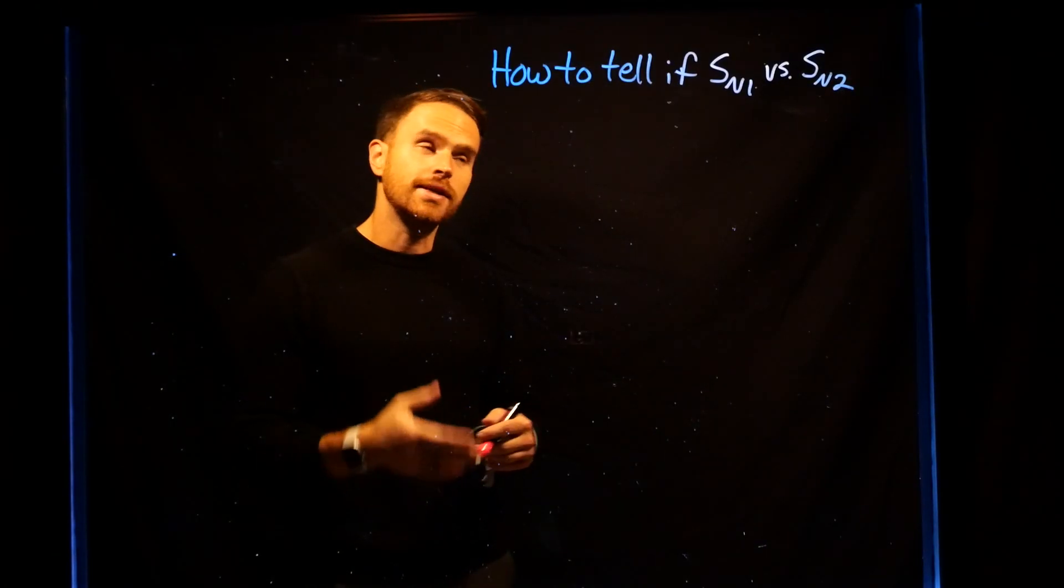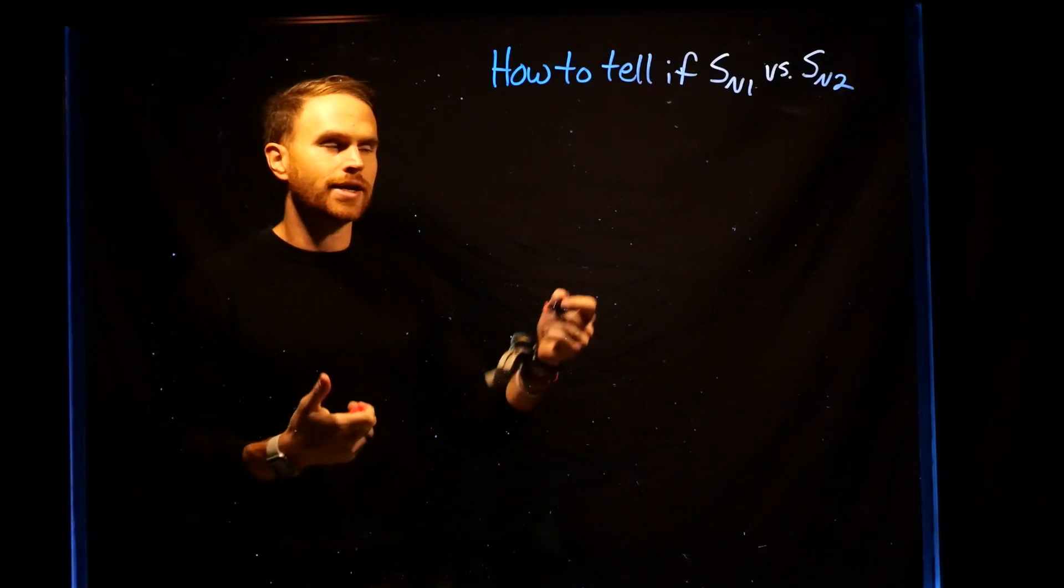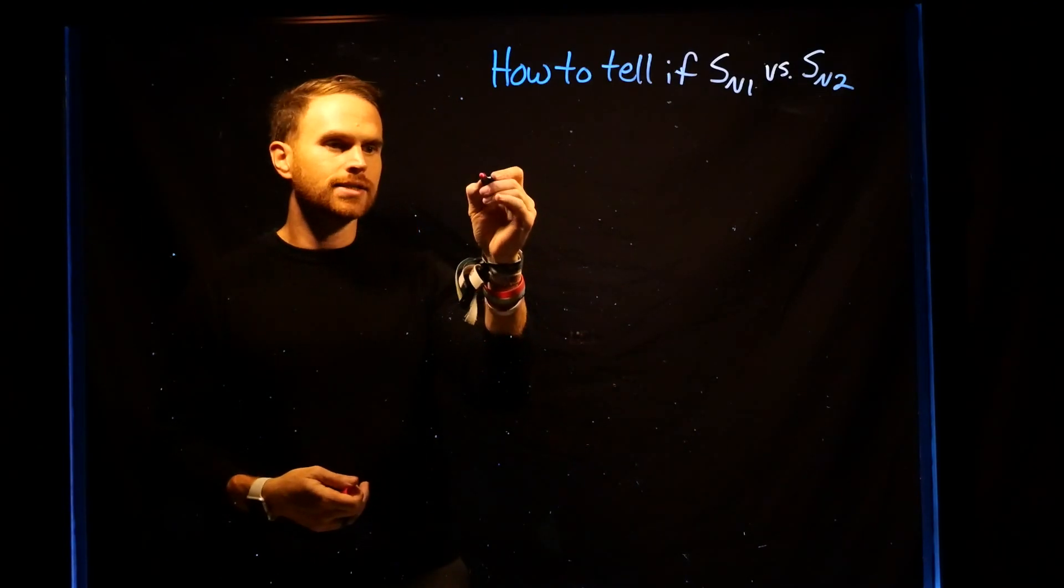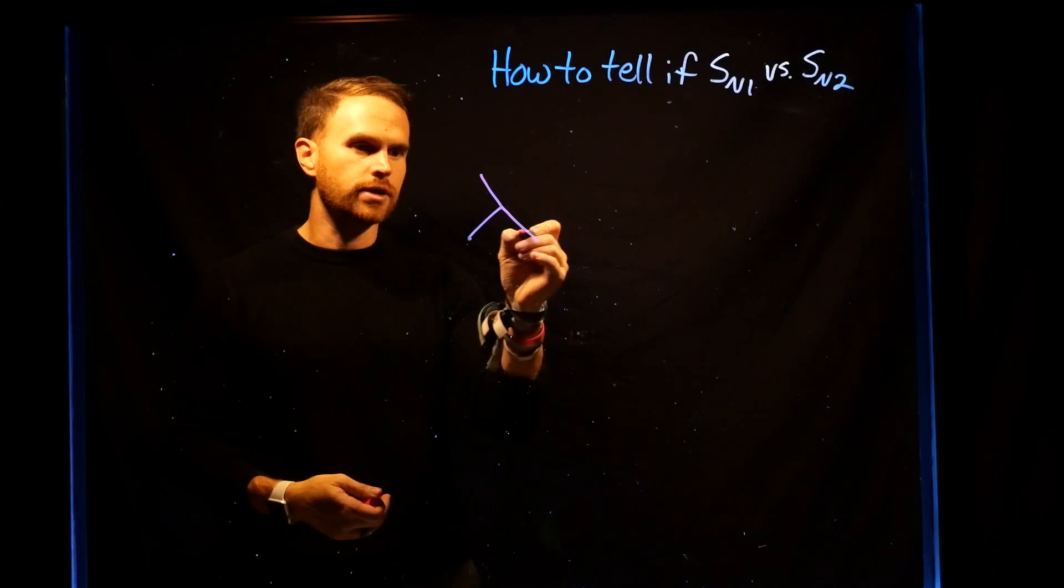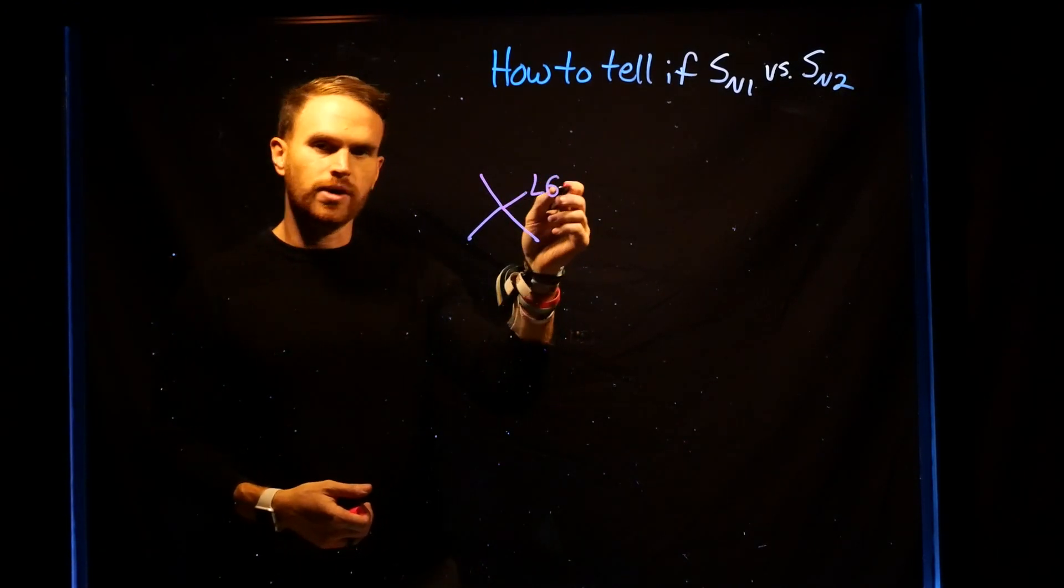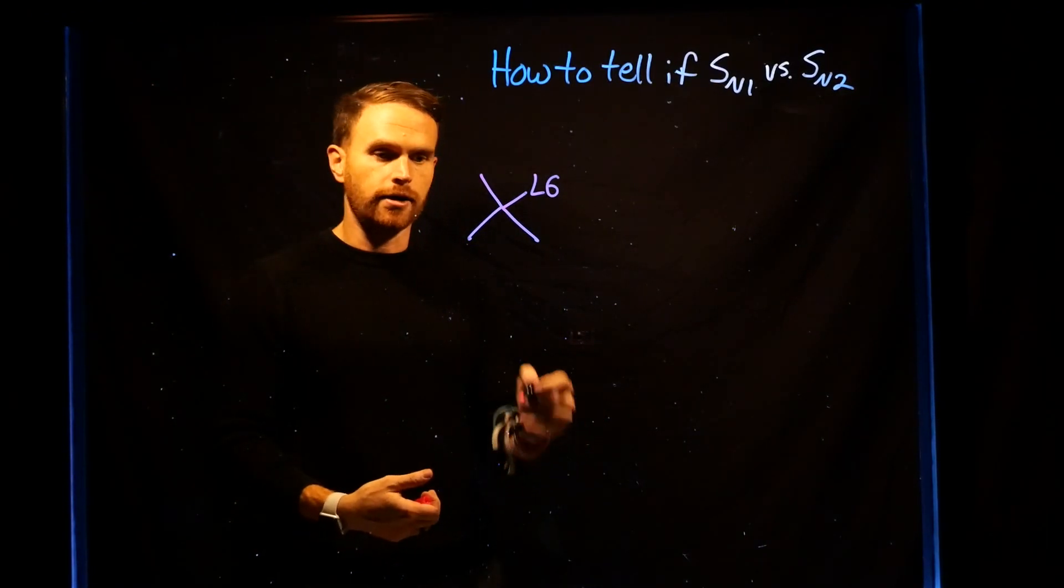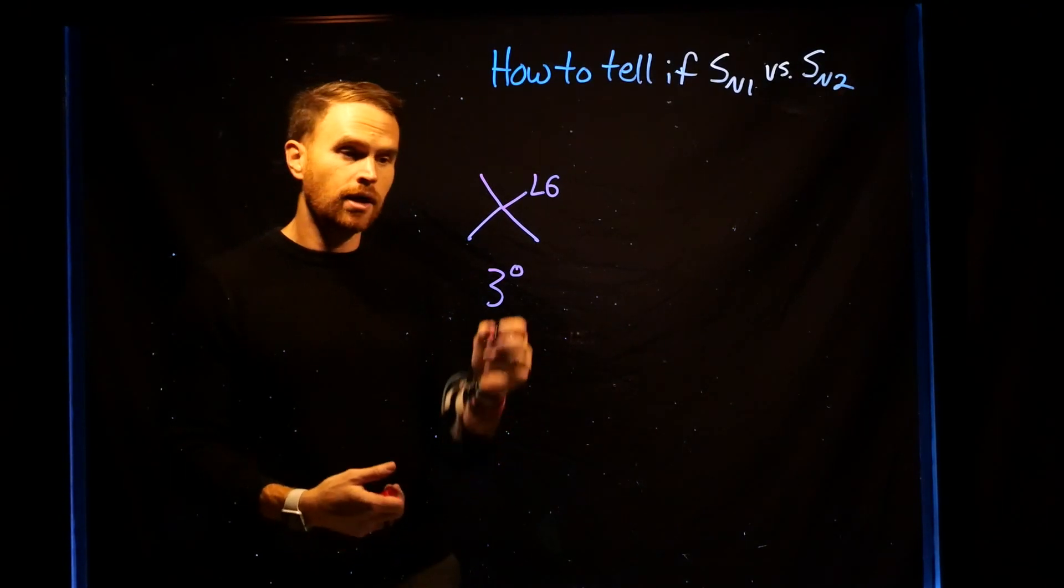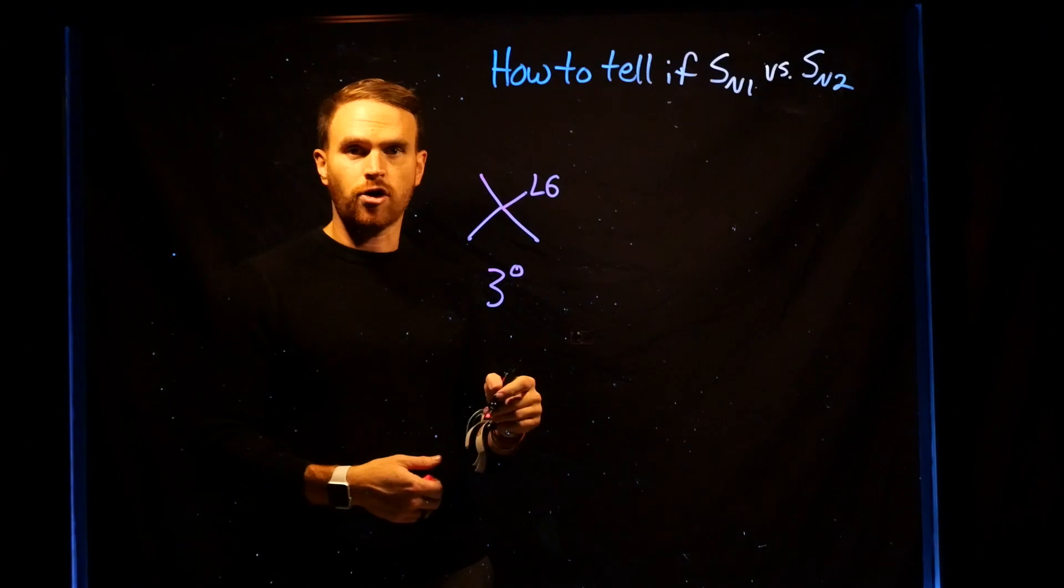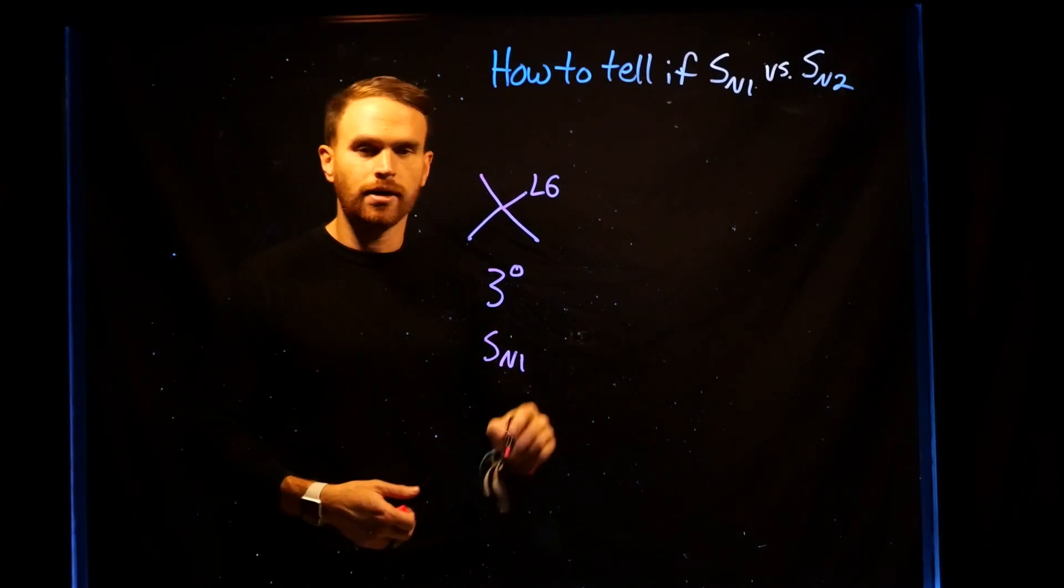How can you tell if a reaction is likely to occur via an SN1 or an SN2 reaction? Well, remember that an SN1 reaction always produces carbocation. Therefore, anytime you have a tertiary carbon where the leaving group is located, this is going to form a tertiary carbocation. Because of the steric encumbrance, in addition to the stability of the carbocation, this is always going to proceed via an SN1 mechanism.